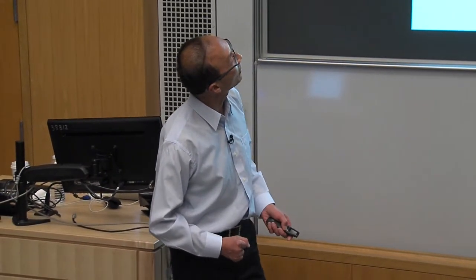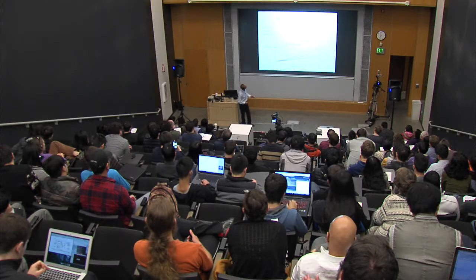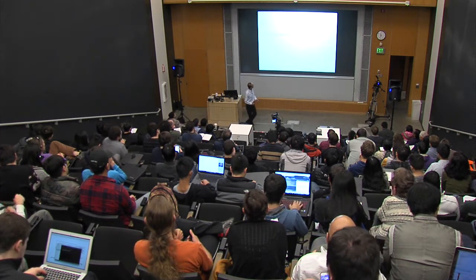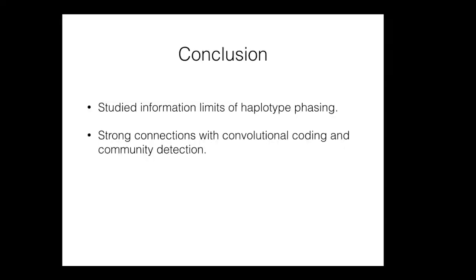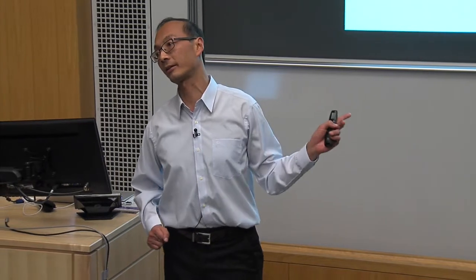Why does this work despite Viterbi being infeasible? Exact recovery takes order n log n reads, but approximate recovery only needs order n reads — much fewer. The bottleneck is getting from approximate recovery to exact recovery. For exact recovery, the typical error event is just one single-node error. If you have most nodes correct, the cleanup step — a majority vote from neighbors — solves that bottleneck and gets you to exact recovery. So efficient approximate recovery implies efficient exact recovery. Thank you.